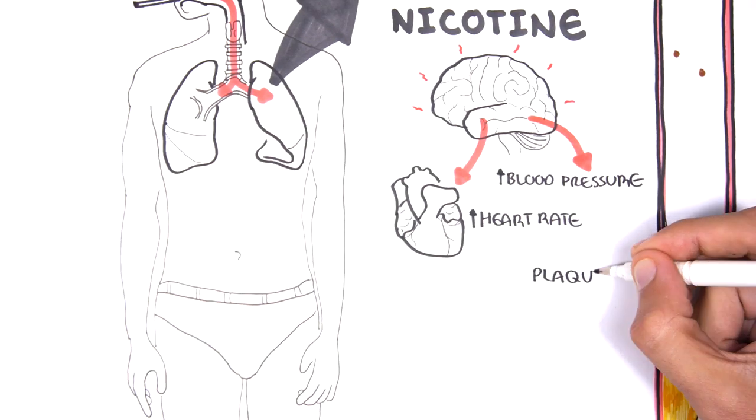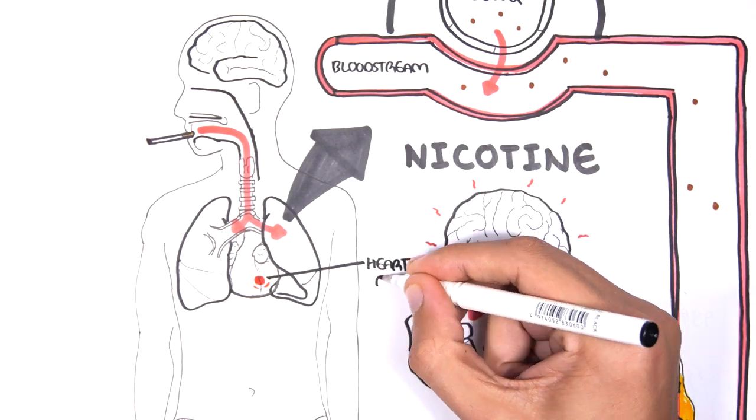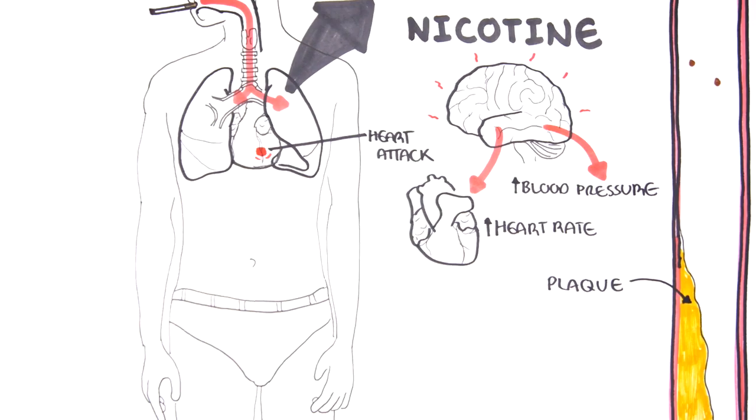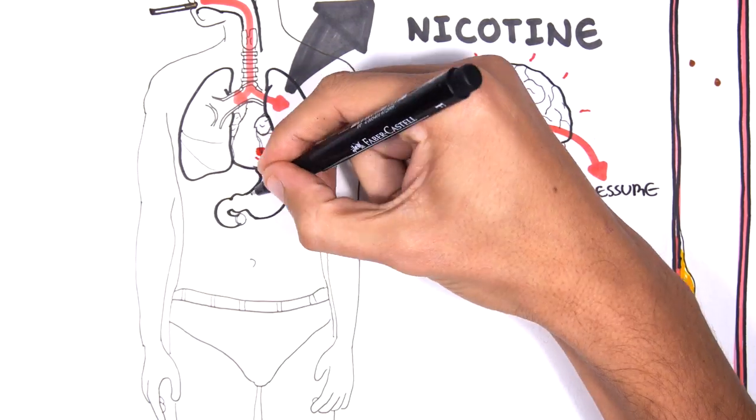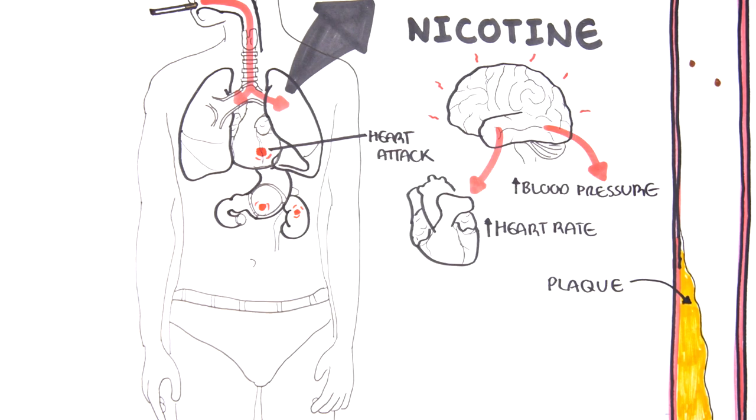Over time it causes plaque to build up inside your arteries. All of these changes increase the risk of heart attack, stroke and gangrene. You're also at risk of blockages in vital organs such as the stomach and kidneys. Nasty.